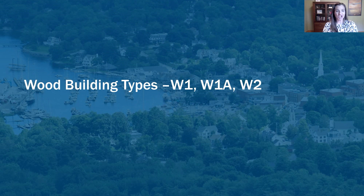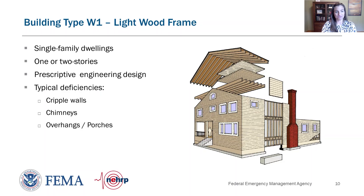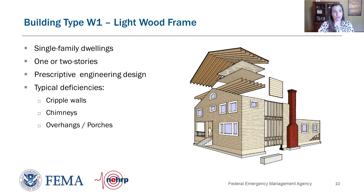We're going to start looking at FEMA building types in detail, beginning with the wood types: W1, W1A, and W2. W1 buildings are light wood frame buildings — generally single-family houses one or two stories high. They typically have repetitive vertical wall framing of wood studs and repetitive horizontal framing of wood floor joists or roof rafters.